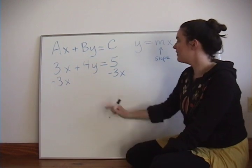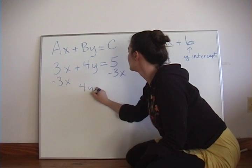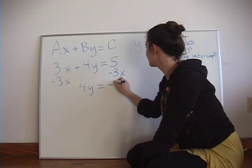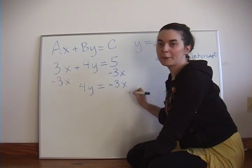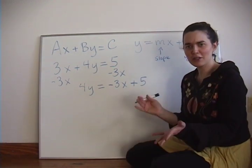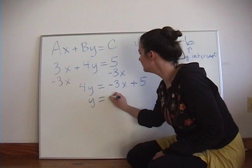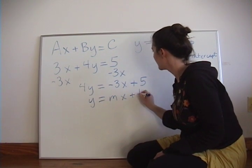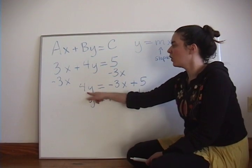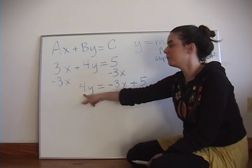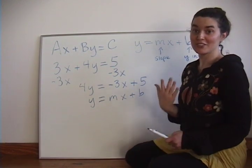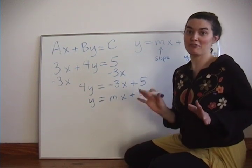Now we just have 4y = -3x + 5. So if we compare this to y = mx + b, we're a lot closer, but we still got this coefficient, this integer in front of Y. So in order to totally get it into slope-intercept form, we want to divide both sides by 4.